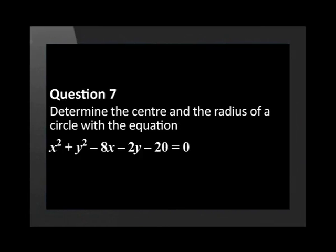Determine the center and the radius of a circle with the equation x² + y² - 8x - 2y - 20 = 0.